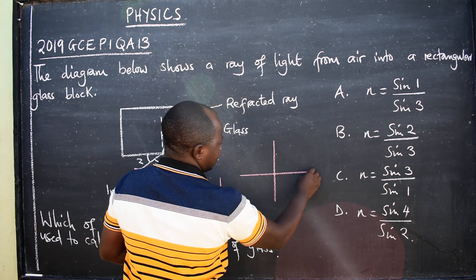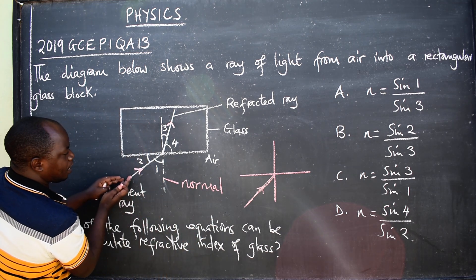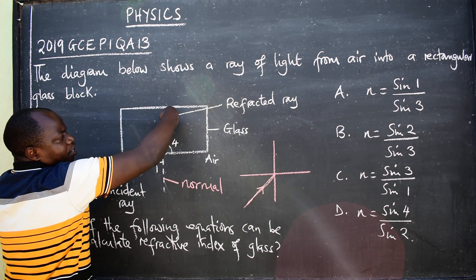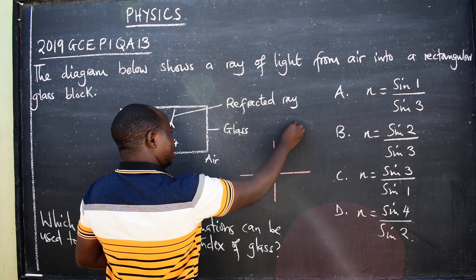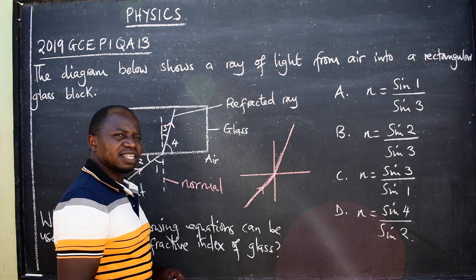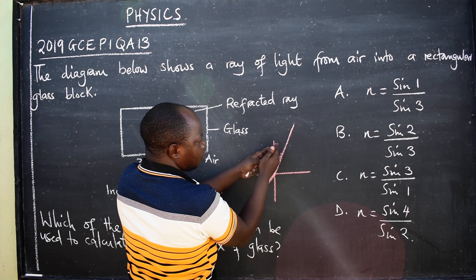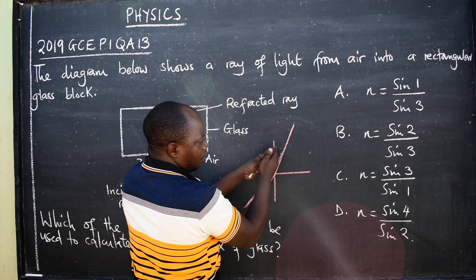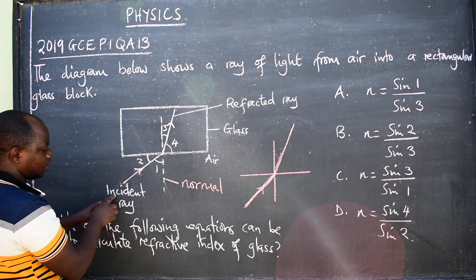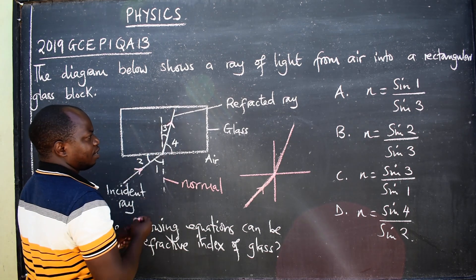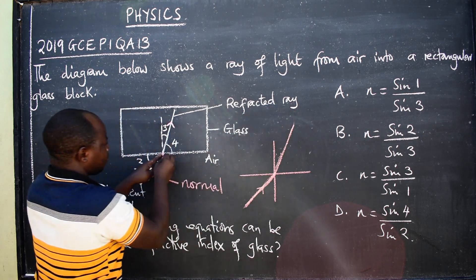The ray strikes this point in this direction — direction is important because it's not always coming from one side; they can indicate coming from the other end, so you have to be careful. Once it strikes this end there will be bending. This bending depends on the density, on how heavy the media is. If it is too heavy it will bend towards the normal. This ray from this point to this point is what is called the incident ray. After refraction there will be a refracted ray from these points to this point.